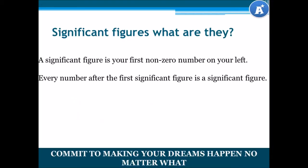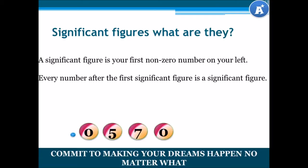Let's look at another number. Let's say we have the number 0.0570. Our first significant figure is our first non-zero number on our left, so that will be 5. Our second significant figure is 7, and our third significant figure is 0. Do you see that? Let's delve further into significant figures.